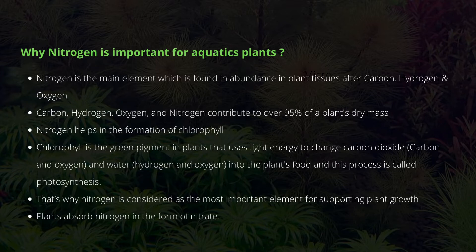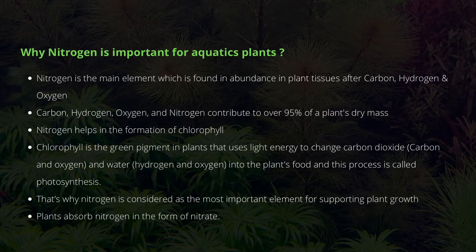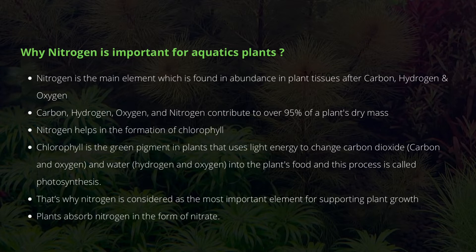Nitrogen is also really helpful in the formation of chlorophyll. Chlorophyll is the green pigment in plants that uses light energy, carbon dioxide, and water to create plant food — a process called photosynthesis, which you may have studied in school. That's the whole reason nitrogen is so important for plants: it helps provide food to the plant, and most of the time plants absorb nitrogen in aquariums in the form of nitrates.